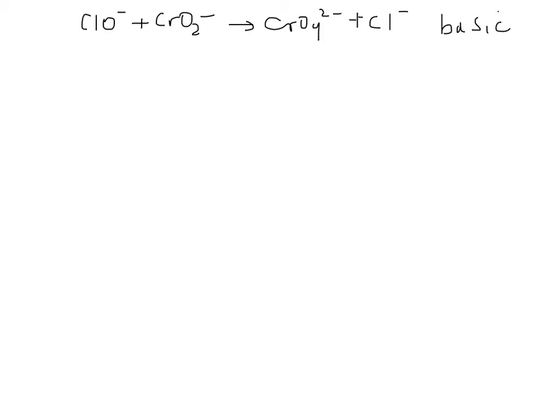So, first thing we're going to do is break it into half reactions: ClO⁻ forms Cl⁻ and then CrO₂⁻ forms CrO₄²⁻. Mass is balanced here, so mass is okay, the chlorines are the same, the chromiums are the same. So we can just leave it on this line and go ahead to the next step and balance the oxygen.